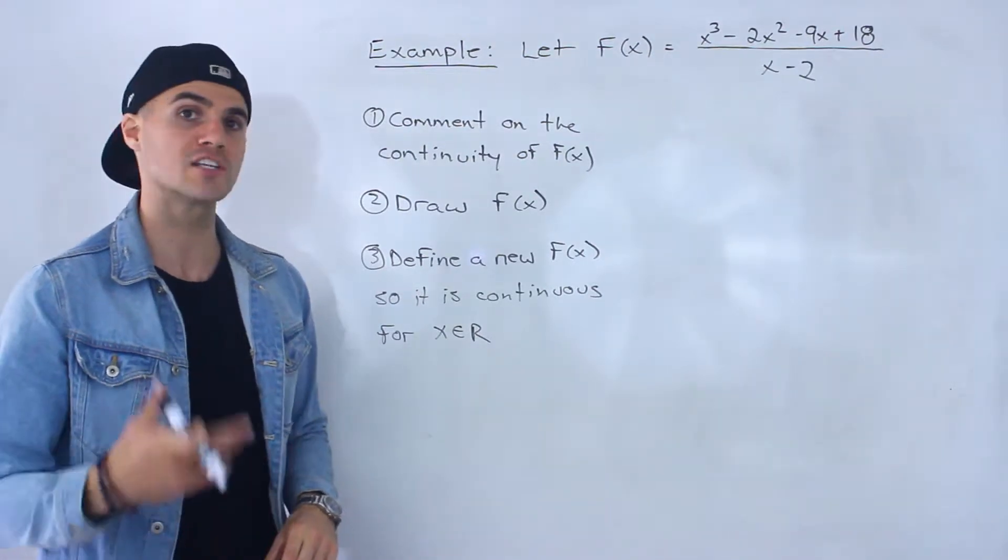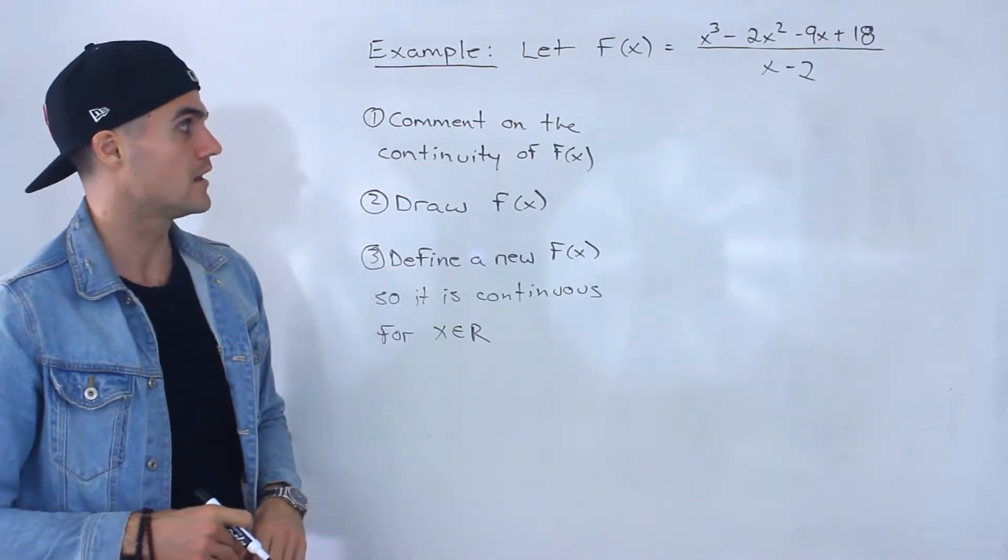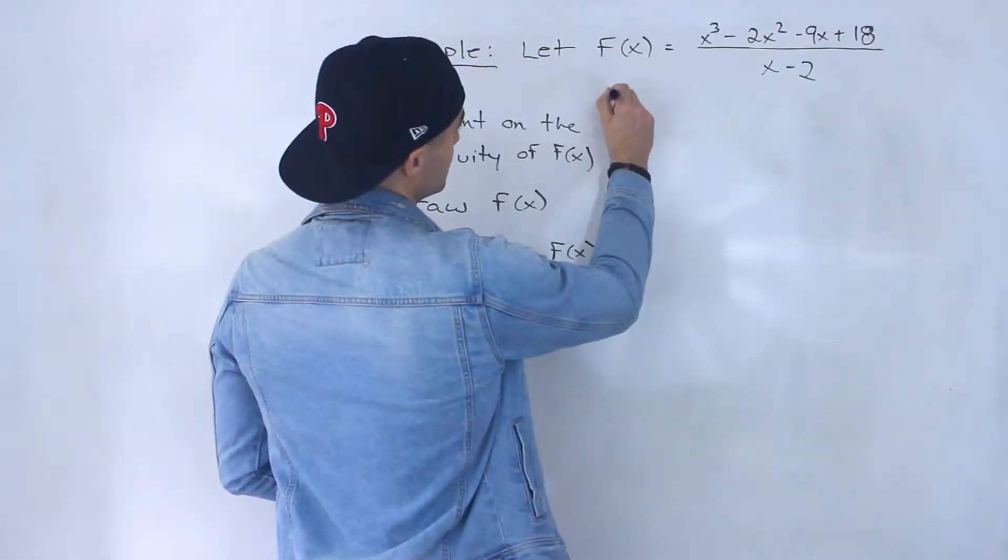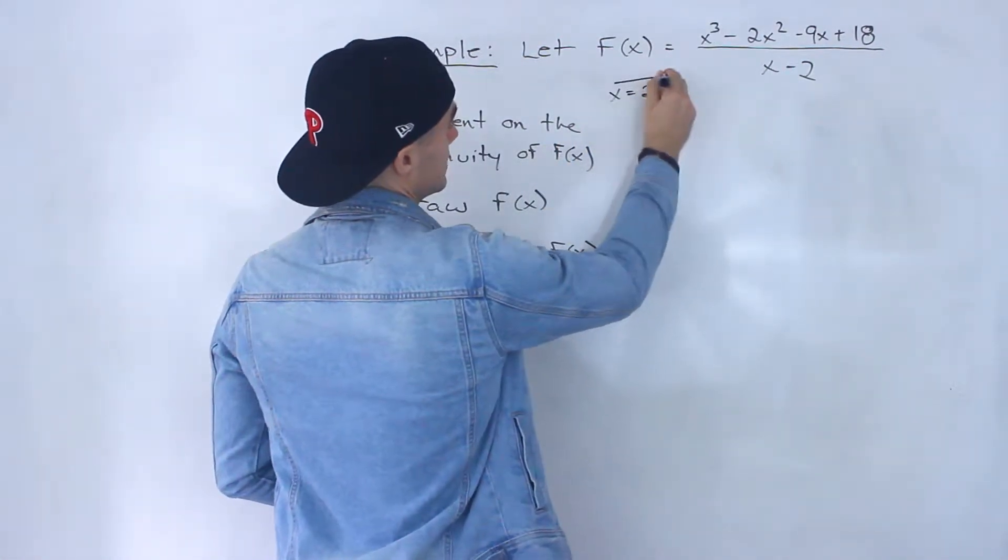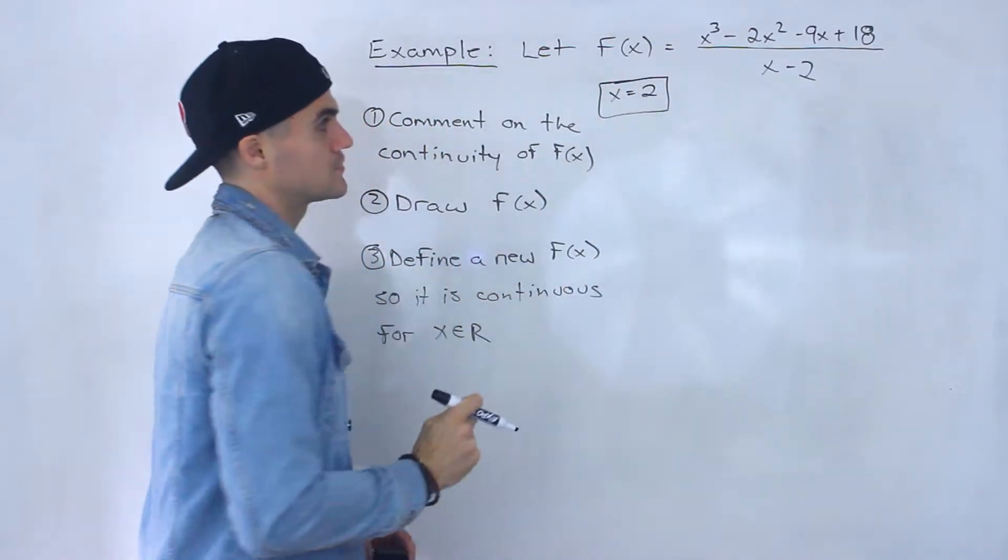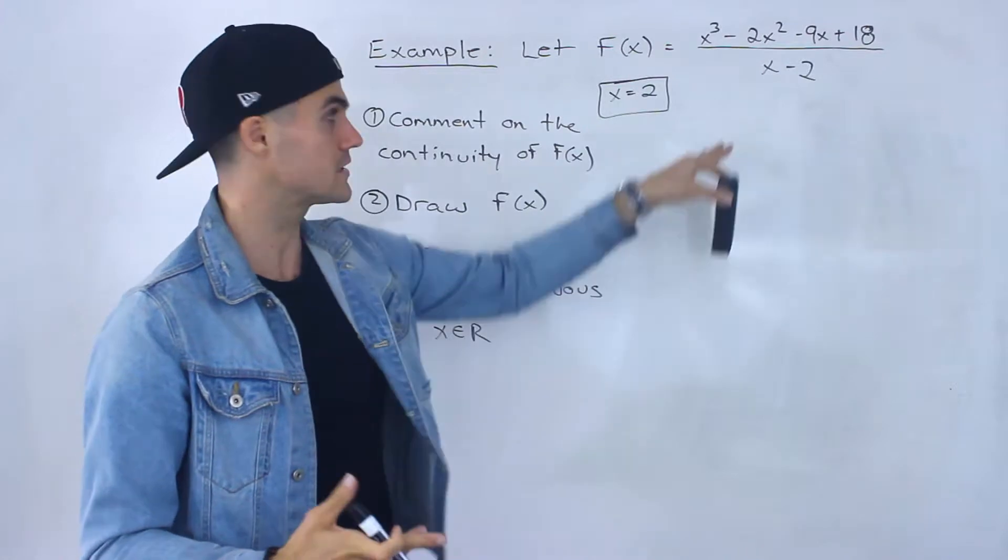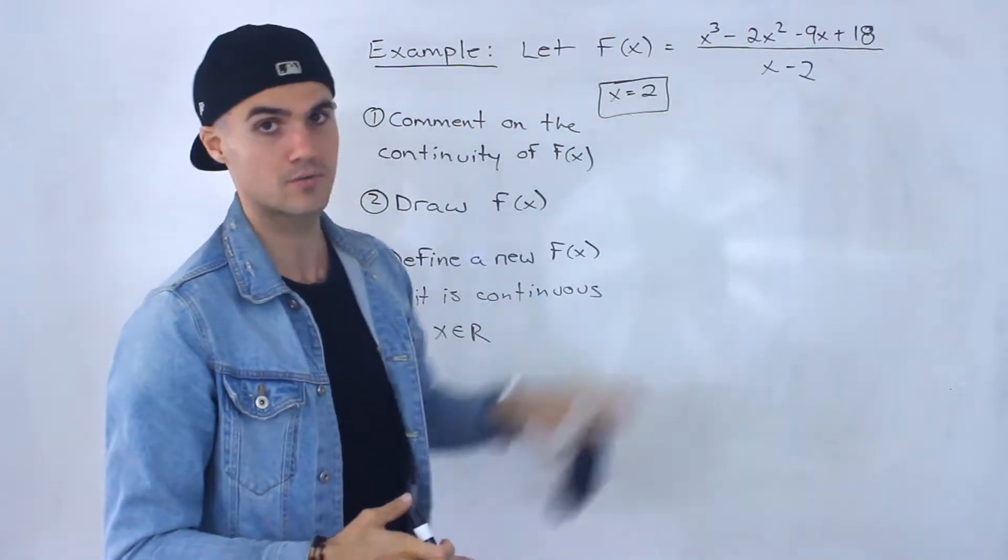So number one, we got to comment on the continuity of this function. And hopefully just by looking at it, you can tell that this function is definitely going to be discontinuous at an x value of 2. Because notice at an x value of 2, the function is going to be undefined because we're going to have a denominator of 0.